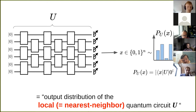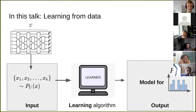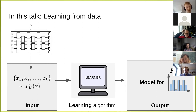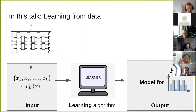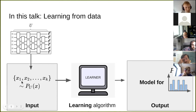Rather, we're going to take a machine-learning-inspired perspective. This talk is about learning from data. The basic scenario: there's some circuit U that's measured in the computational basis, giving rise to a set of samples x_1 to x_k. These samples are given as input to a learning algorithm. This algorithm only has access to the samples — no knowledge of the circuit U itself. It doesn't know what gates are on the circuit, and it's supposed to output a model for the underlying probability distribution P_U.